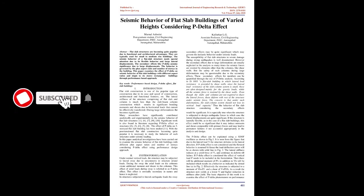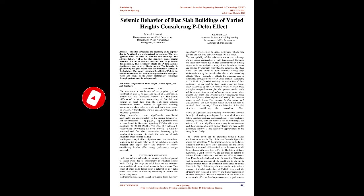Seismic Behavior of Flat Slab Buildings of Varied Heights Considering P-Delta Effect. Abstract: Flat slab structures are becoming quite popular due to functional and architectural advantages. They are typically used for small to medium rise buildings. The seismic behavior of a flat slab structure needs special attention due to its flexible behavior and large lateral displacements. The secondary effects like P-Delta assume significance due to large displacements. The behavior is governed by the plan aspect ratio and number of stories in the building. This paper examines the effect of P-Delta on seismic behavior of flat slab buildings with different aspect ratios and single to six-story rectangular buildings through a performance-based approach.